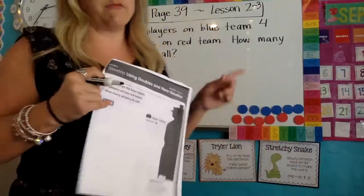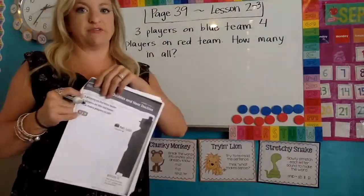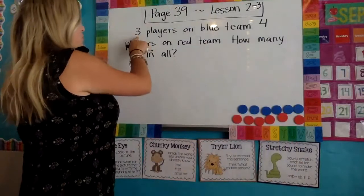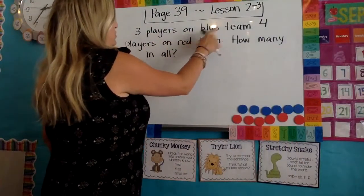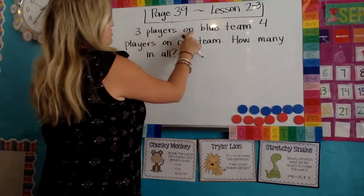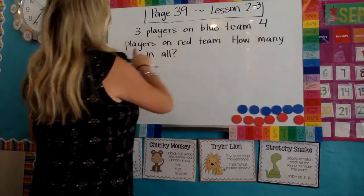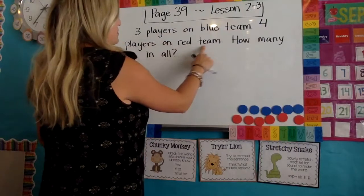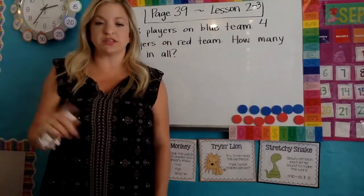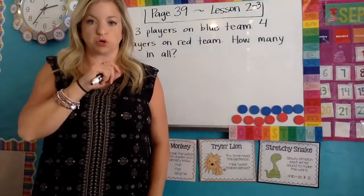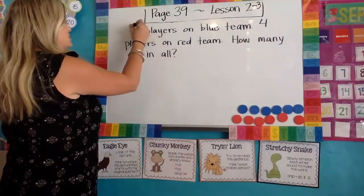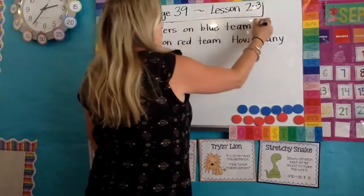Up at the top I have written down the question that they have on your paper as well. It says three players on blue team — three players on the blue team, four players on the red team. How many in all? Our first job is to circle the numbers when they come to a word problem. So circle the numbers.